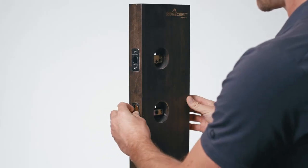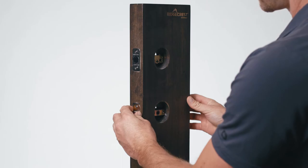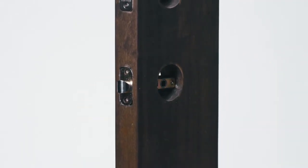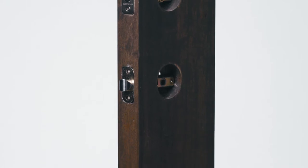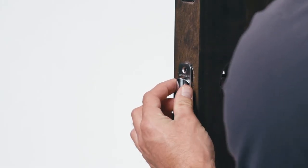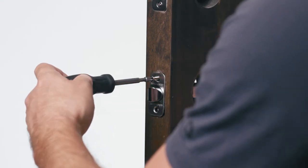Next, install the knob or lever latch into the bottom bore hole. Make sure to spin the latch tongue in the proper direction so that the door can close and latch, matching the handing of your door. Next, install the latch cover plate and secure the latch using supplied three-quarter inch wood screws.